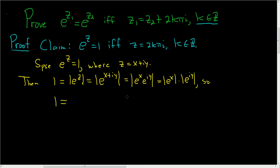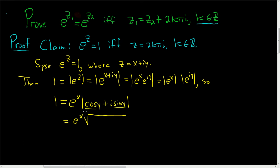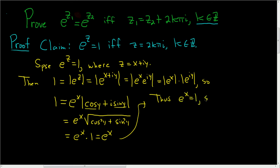So 1 is equal to — well, the modulus of e to the x is simply e to the x, since e to the x is a real-valued function and the modulus of a real number is just the absolute value. For the modulus of e to the i·y, we use Euler's identity: we can write e to the i·y as cosine y plus i sine y. To find the modulus we take the square root of cosine squared plus sine squared, which equals 1 by the Pythagorean identity. So this gives us 1 equals e to the x, meaning e to the x equals 1, and therefore x equals 0.